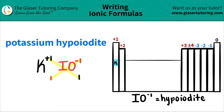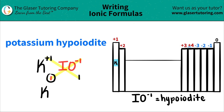When you crisscross, don't worry about the charges anymore. They kind of vanish. And you're just looking at the subscripts — the bottom numbers. Now we're ready to write our formula. So in this case, I have potassium K, and I only need one of them, so I don't have to write one.